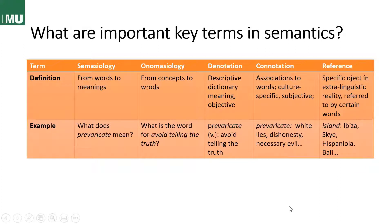Last but not least we have reference, which is a specific object in our world — our extra-linguistic reality — that certain words refer to. 'Prevaricate' wasn't a good example, so I switched to 'island.' References for island would be Ibiza, Skye, Hispaniola, Bali — any island you can think of is a reference for the word island.